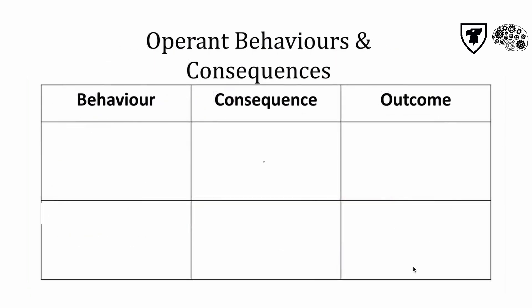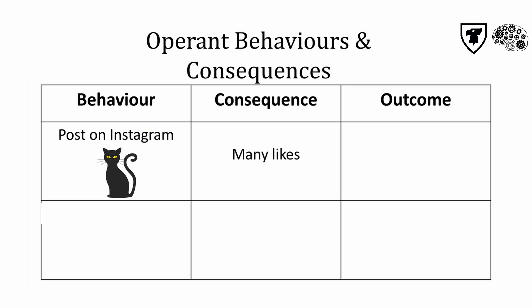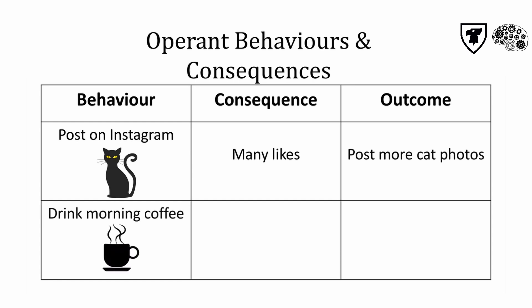Here are some examples of operant behaviors, their consequences, and the outcome on future behavior. If you post a picture of your cat on Instagram, you might be rewarded with loads of likes. This behavior resulted in a win for you, so you'll probably post more cat photos in the future. How about your morning coffee? If your coffee gives you a jolt so you feel more awake and alert, and this helps you start your day, you're likely to continue your morning coffee drinking.